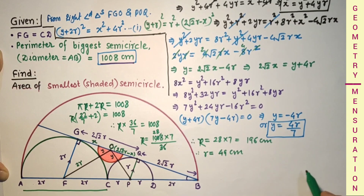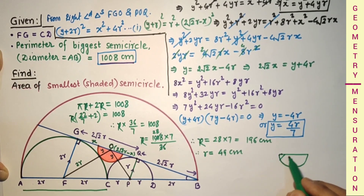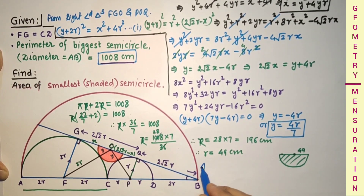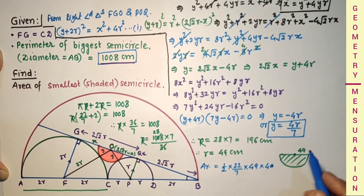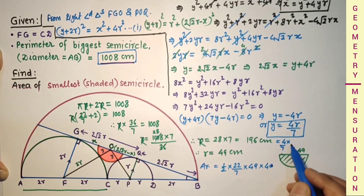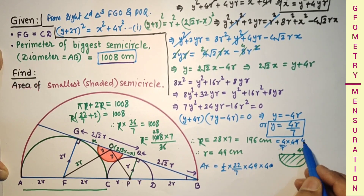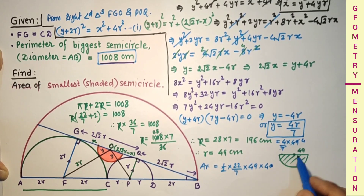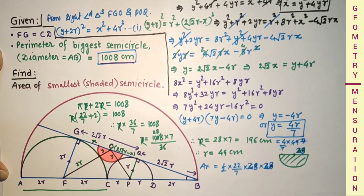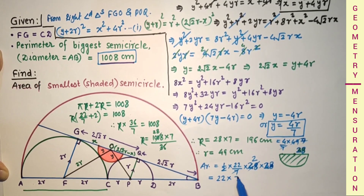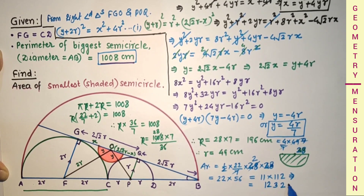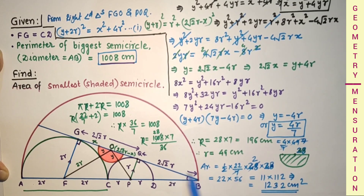Now, the area of the required pink semicircle: the radius y = 4r/7 = 4 × 49/7 = 28 cm. Area = (1/2)πy² = (1/2) × (22/7) × 28 × 28 = 22 × 56 = 11 × 112 = 1232 cm². This is the required area of the pink semicircle.